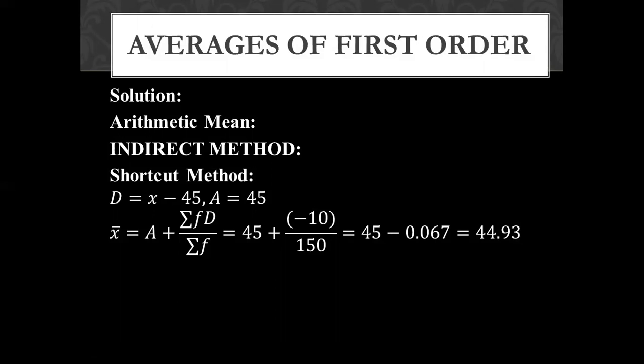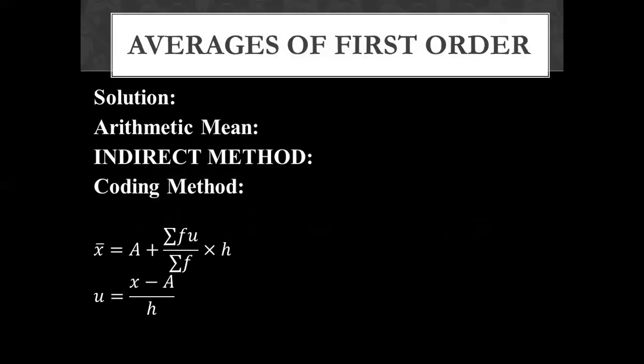Now in the same way, we have to solve it by coding method. To solve by coding method the formula is: x bar equal to A plus summation fU over summation f multiplied by h. Here h or at the place of h, C also comes. h comes when size of class exists.